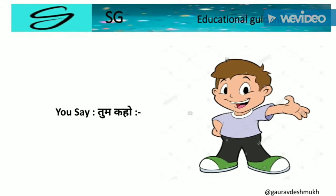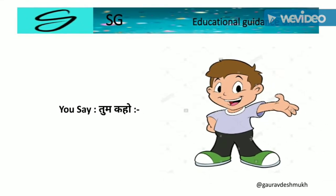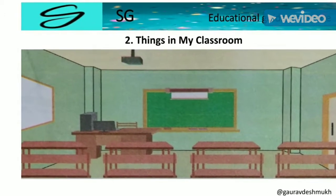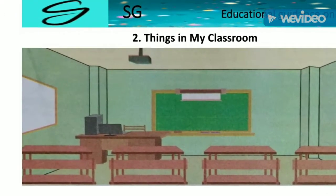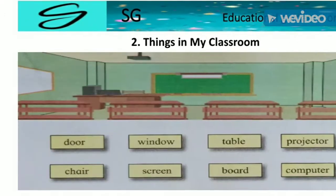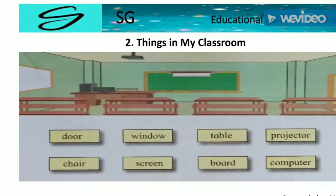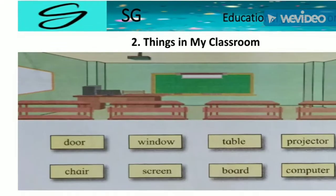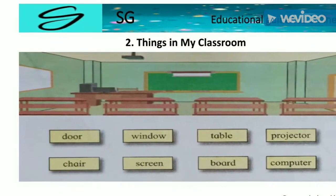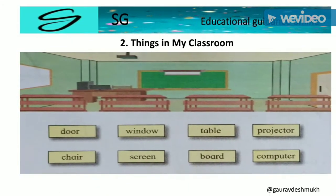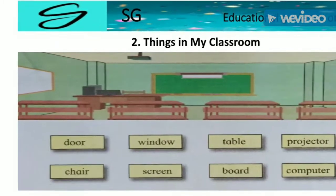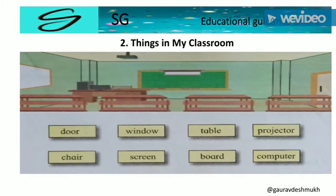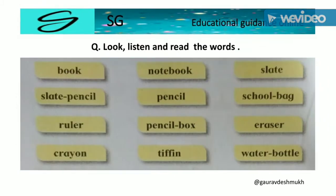Second Number: Things in My Classroom. Door, Window, Table, Projector, Chair, Screen, Board, Computer. Look.